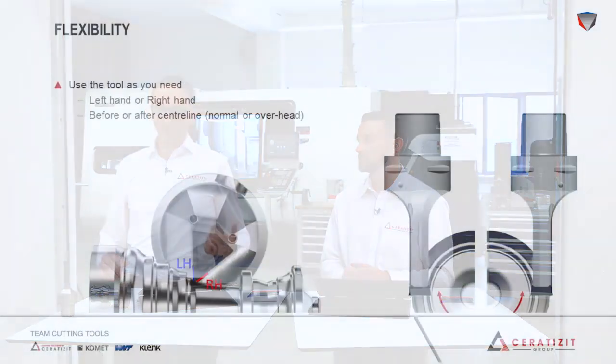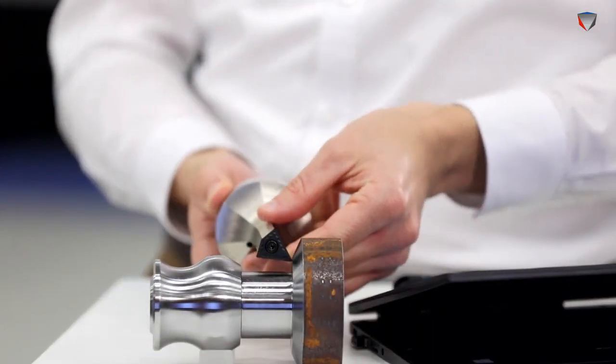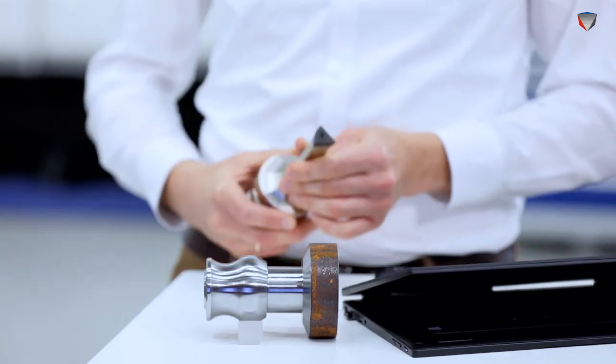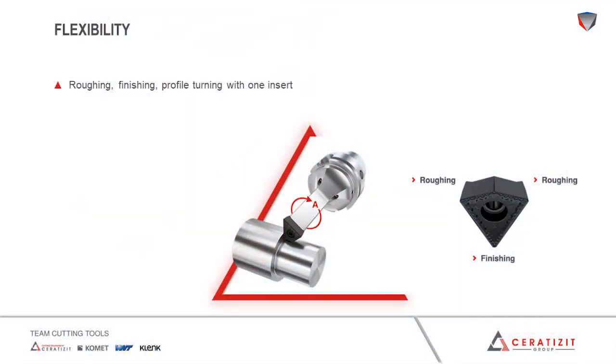Free turn is extremely flexible because the angle can be changed during the cut, so you can use the tool as you need it — as a left-hand tool or as a right-hand tool, before spindle center or even behind. You're completely free. You can use one tool for roughing and for finishing; it's all just a quick adjustment of the spindle. This flexibility results in a reduction of tools needed, fewer tool changes, less downtime, more positions left in your tool magazine, and an overall increase in productivity.